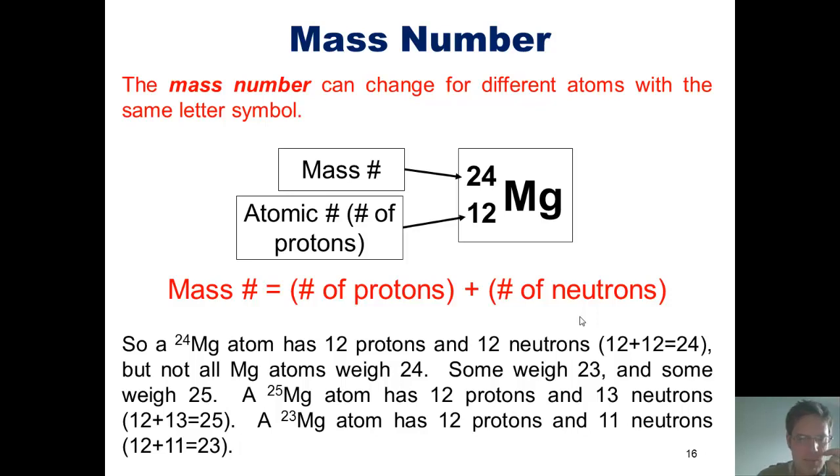But not all magnesium atoms weigh 24. Some weigh 23, and some weigh 25. How is that possible? Because different magnesium atoms can have different numbers of neutrons.